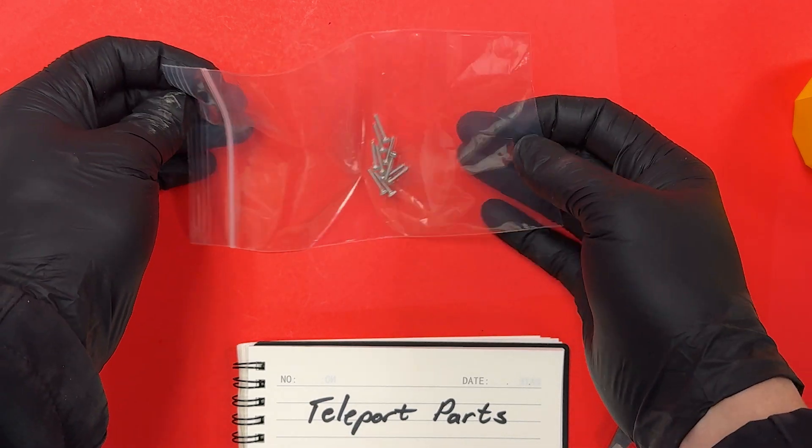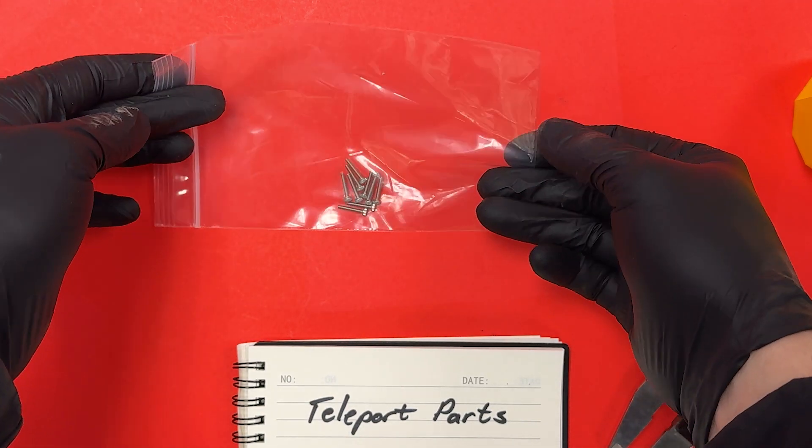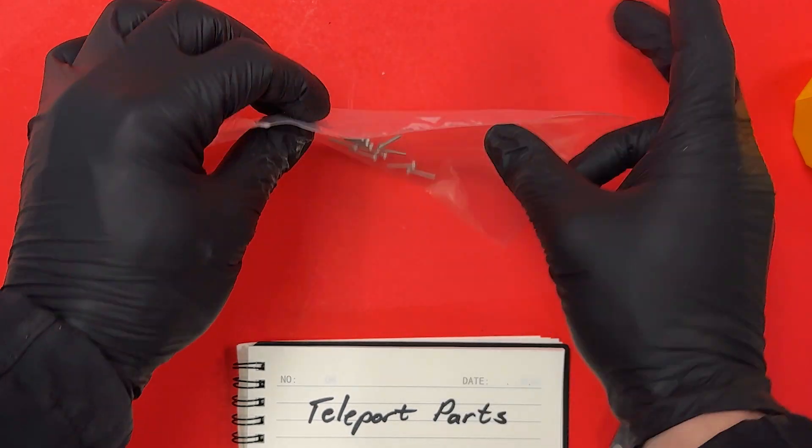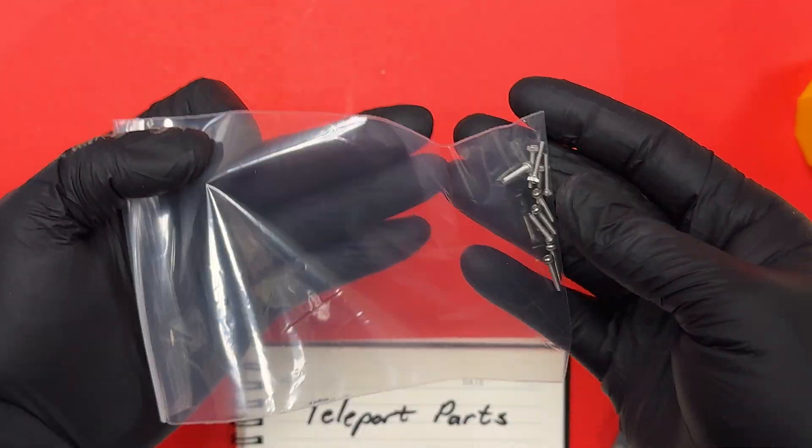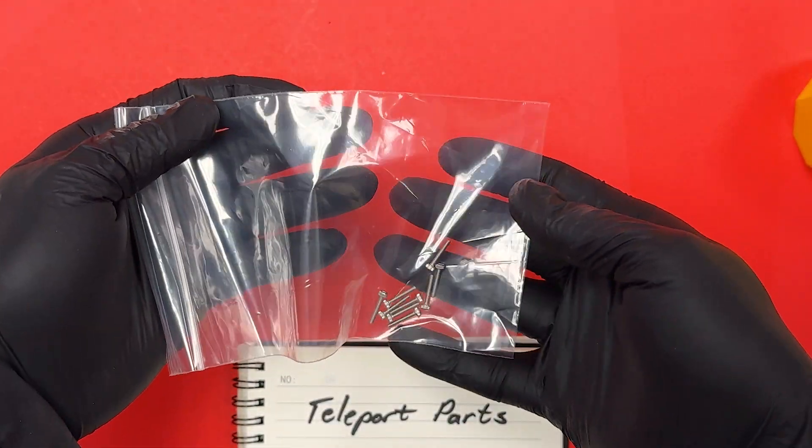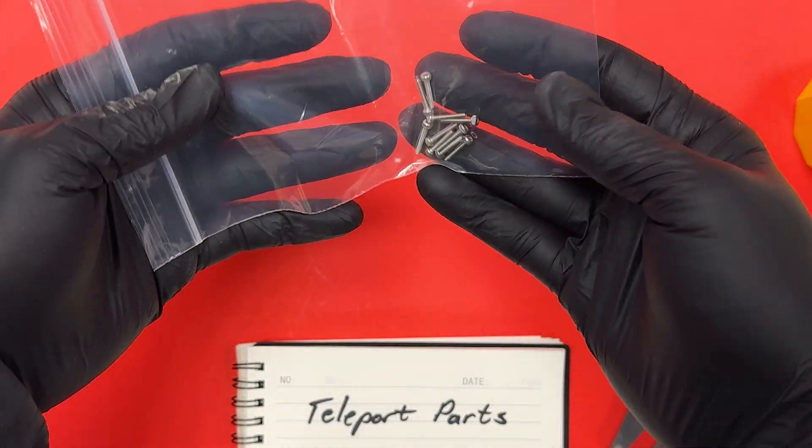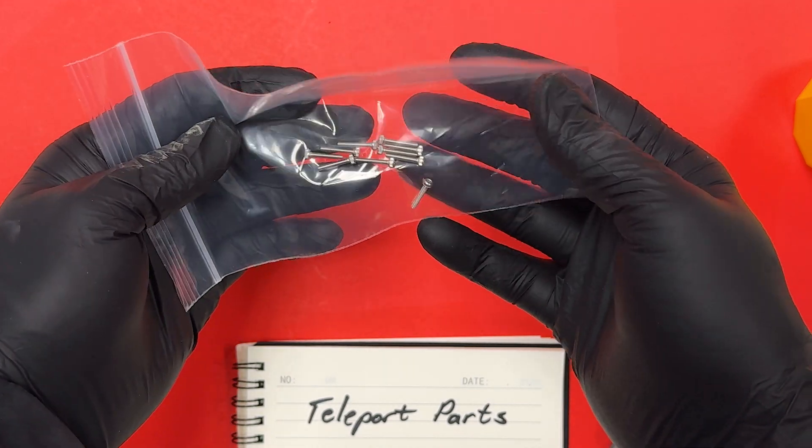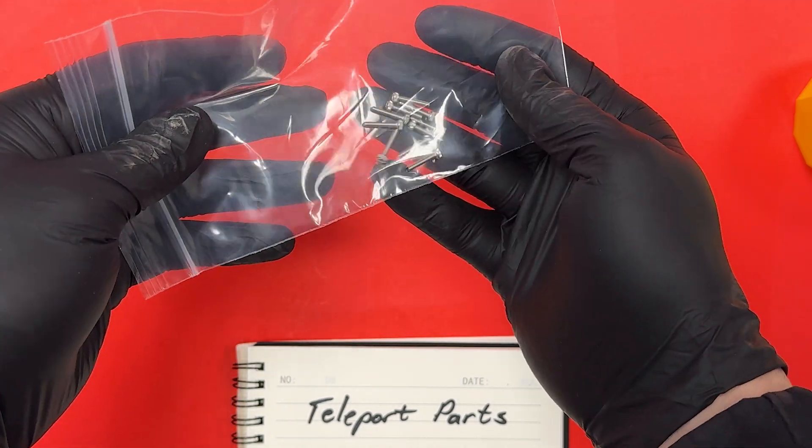Over time, we will continue to expand the selection of screws inside of Teleport, but this is a good baseline to get started doing whatever you need to do. Generally, a set of 10 of these will cover most things you need to do. If you need to, you can include multiple sets with any Teleport match when you're setting it up inside of the app.